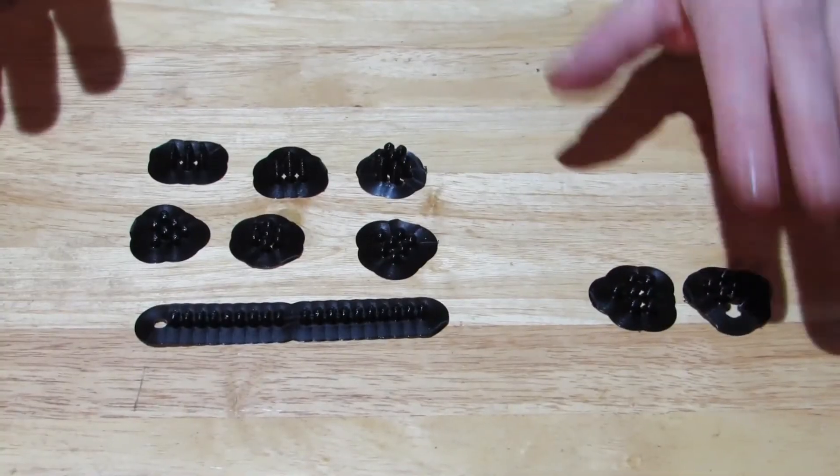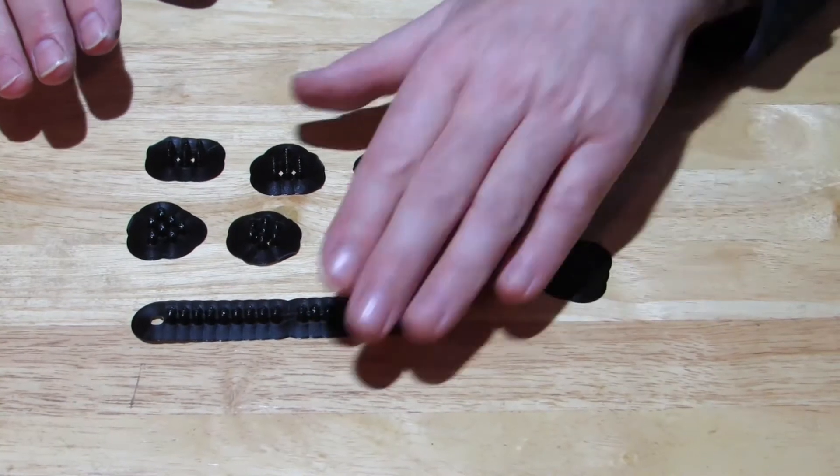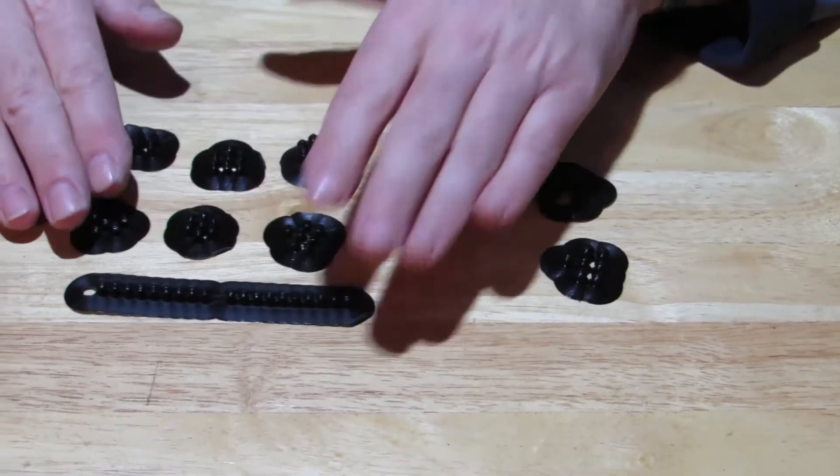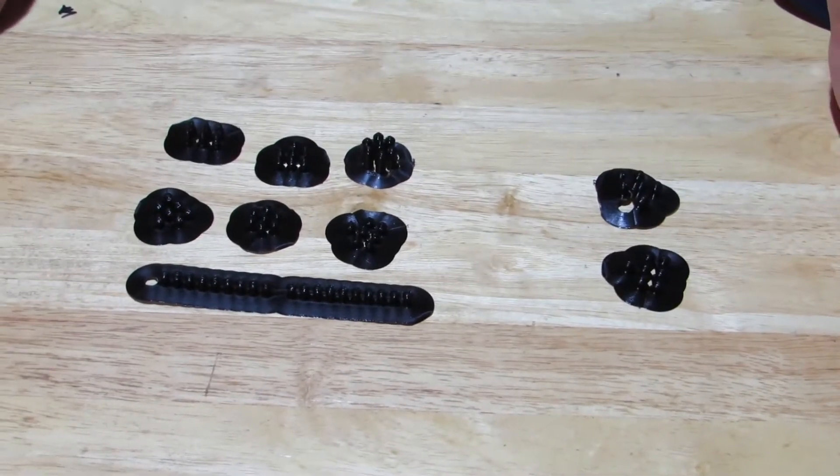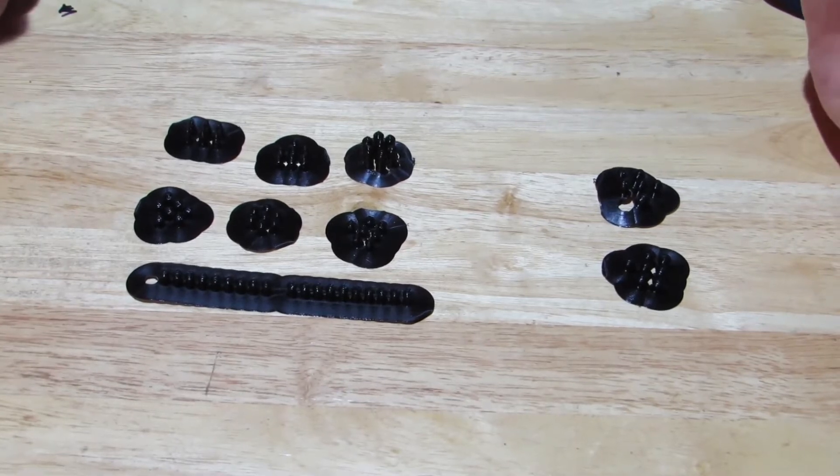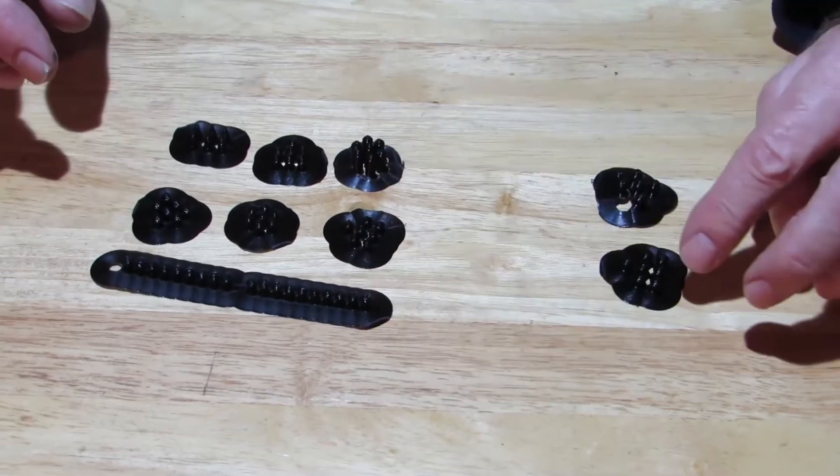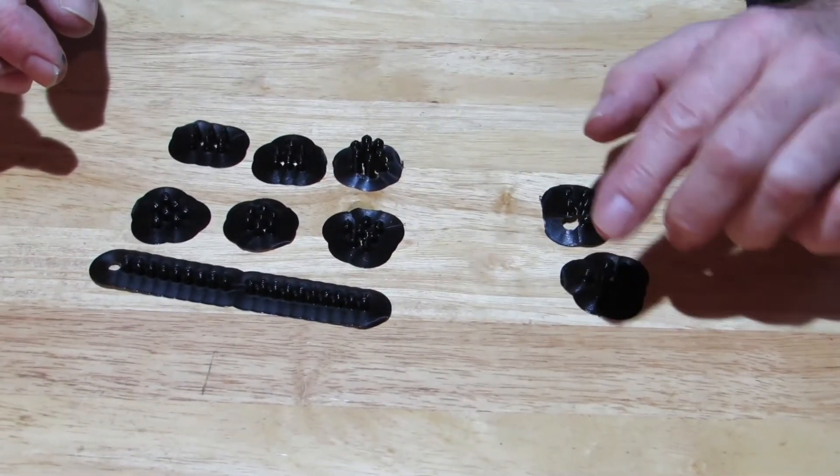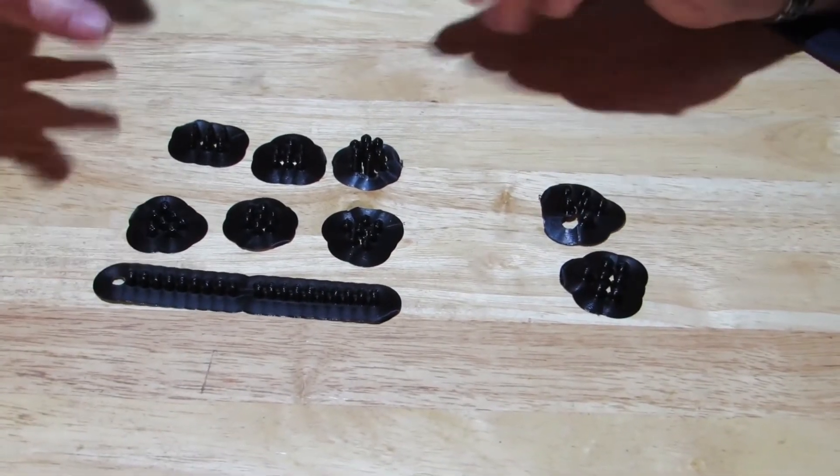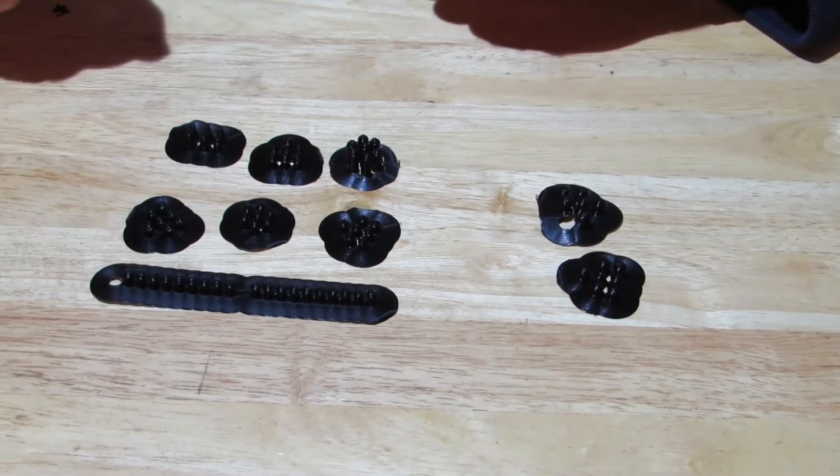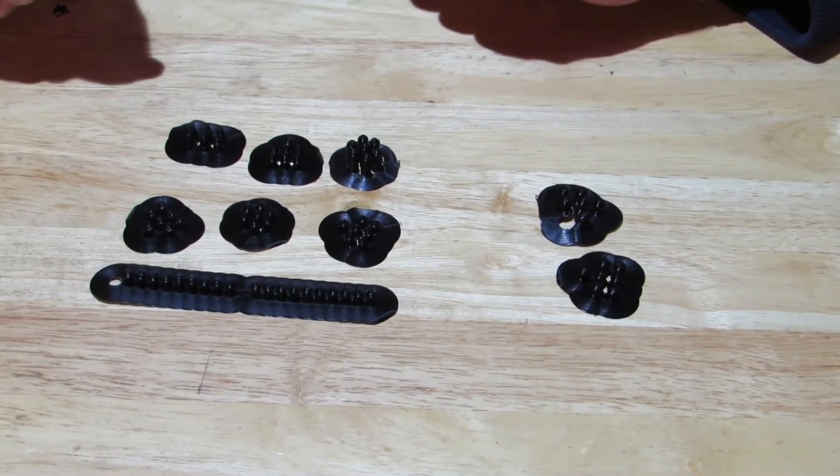Okay guys, what we've got here is 3D printed airgun pellets. These are just pre-made patterns that I've got from Thingiverse, other people's work, just printed them out and we're going to give them a try. I've got seven lots of .177 and two lots of .22. Some of them are very similar, but I thought I'd just give it a try. We're going to try them out in different guns.